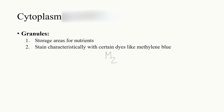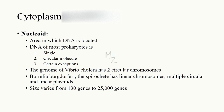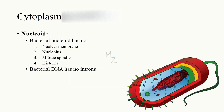The nucleoid is the area in which DNA is located. The DNA of most prokaryotes is a single circular molecule, with certain exceptions — for instance, Vibrio cholerae has two circular chromosomes, and Borrelia burgdorferi, a spirochete, has linear chromosomes and multiple circular and linear plasmids. The size of bacterial genomes varies widely, from 130 to 25,000 genes. The bacterial nucleoid contains no nuclear membrane, no nucleolus, no mitotic spindle, and no histones, showing little resemblance to the eukaryotic nucleus. One major difference is that bacterial DNA has no introns, whereas eukaryotic DNA does.